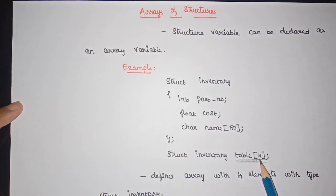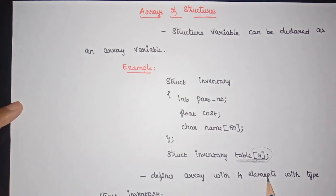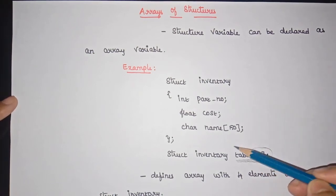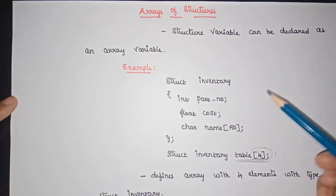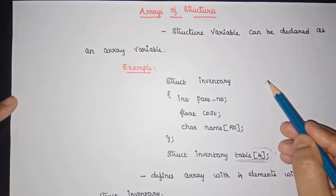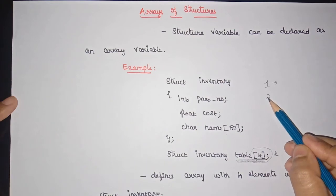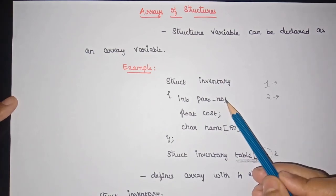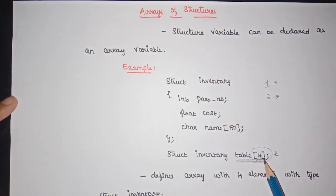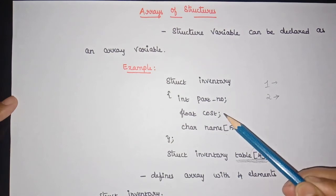The size of the array 'table' is four, which defines an array with four elements, all of type struct inventory. In simple terms, based on the number of elements we can repeat the structure. If the size is one, we have one set of part number, cost, and name. If the size is four, we have four elements, each with its own member variables: part number, cost, and name.